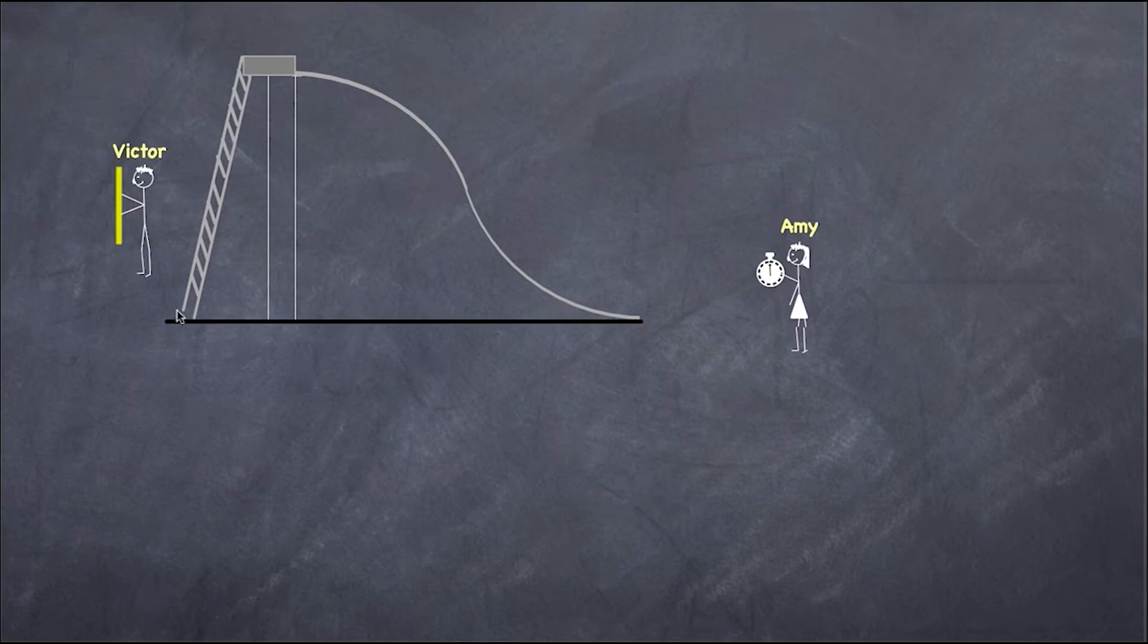I have two people here: Victor and Amy. Victor is measuring the voltage—the rise or supply of energy to the system, analogous to the height of the ladder. Amy measures the rate at which people pass her. Amy is like measuring the current.